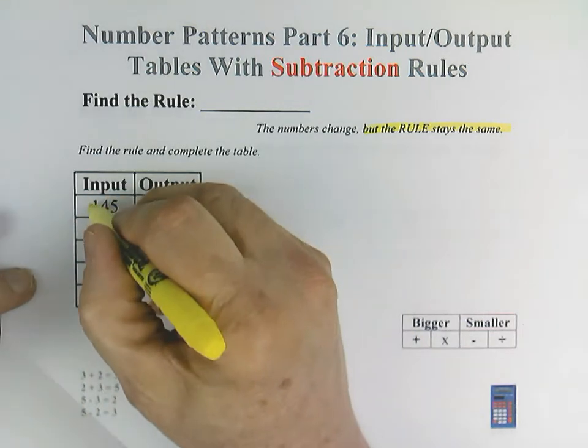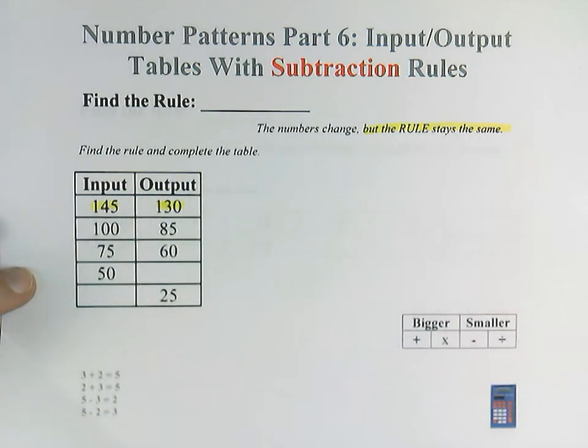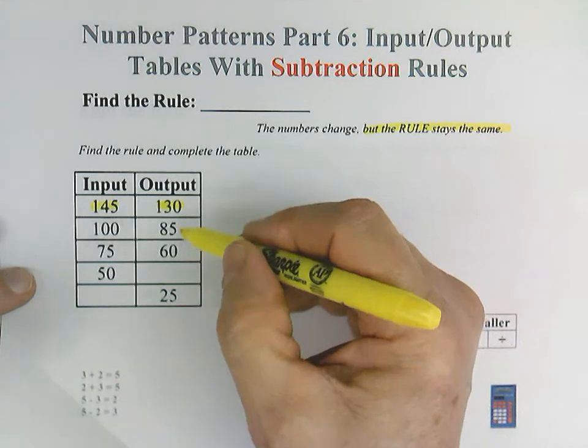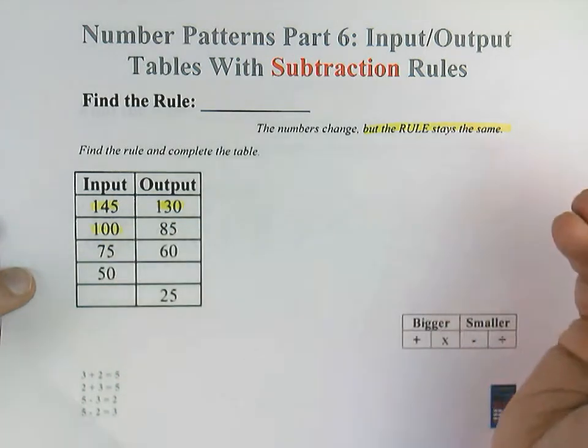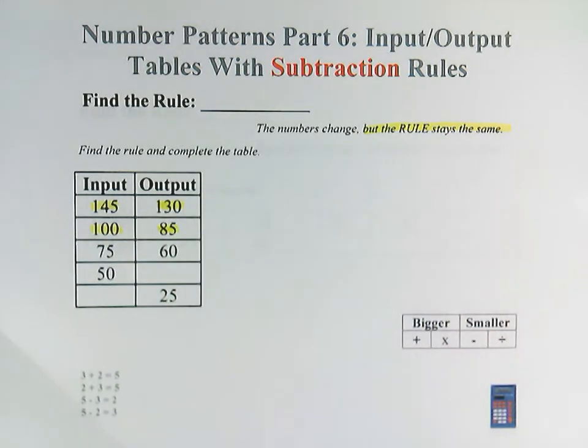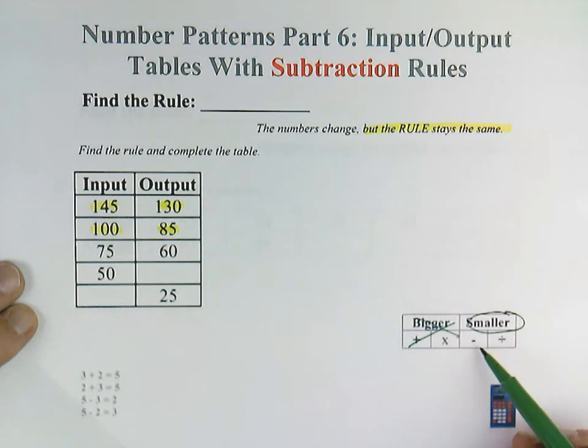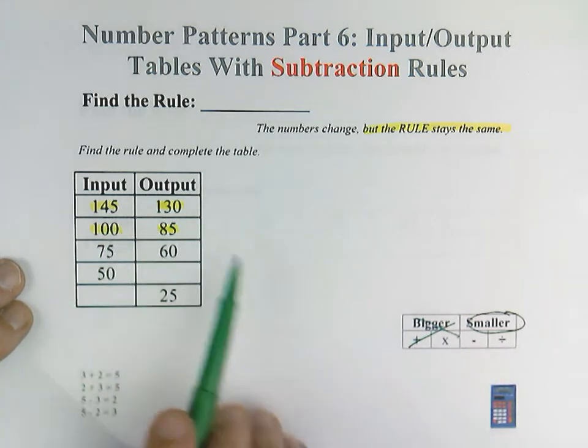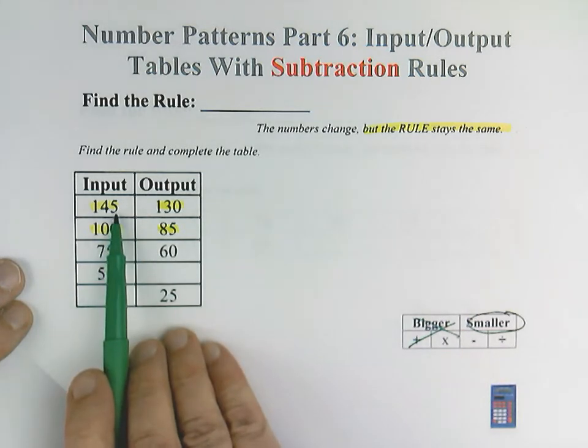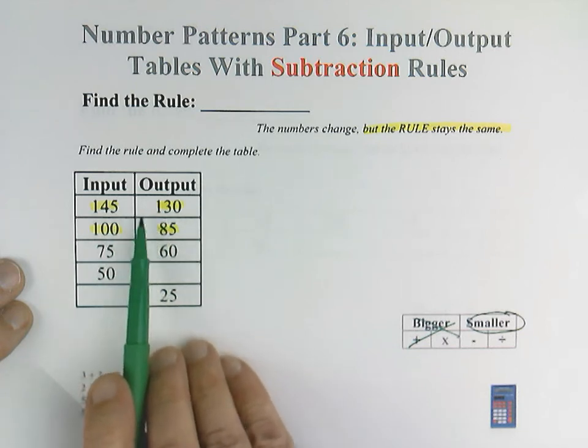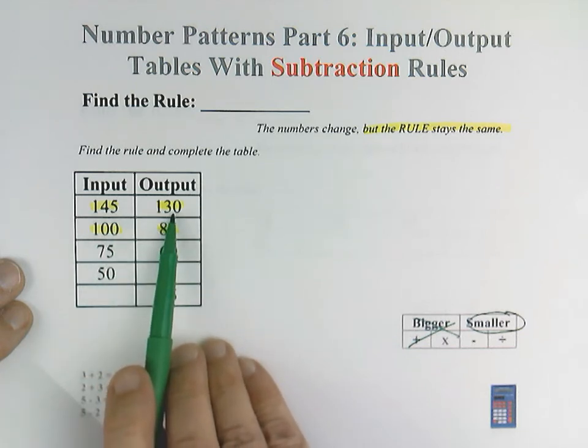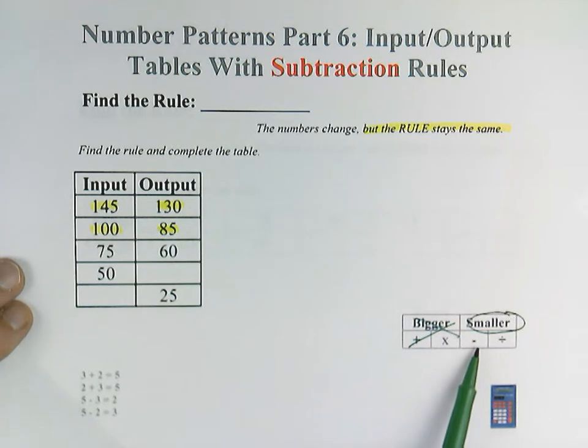So here we start with our input of 145, output 130. I'm just going to check one more and make sure it's consistent. Input 100, output 85. So our numbers are definitely getting smaller. They're not getting larger, which means it's either going to be subtraction or a division rule. I can rule out division because 145 divided by any whole number is not going to be 130. So I can say with a lot of confidence this is subtraction.